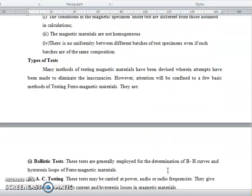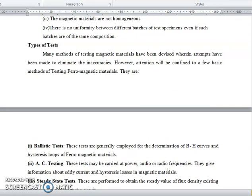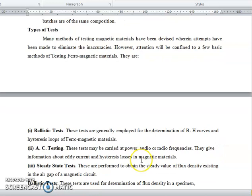Types of Tests: Ballistic Test - these tests are generally employed for determining BH curve and hysteresis loop of ferromagnetic materials. AC Testing - these tests may be carried out at power, audio and radio frequencies. They give information about the eddy current and hysteresis losses in magnetic materials.